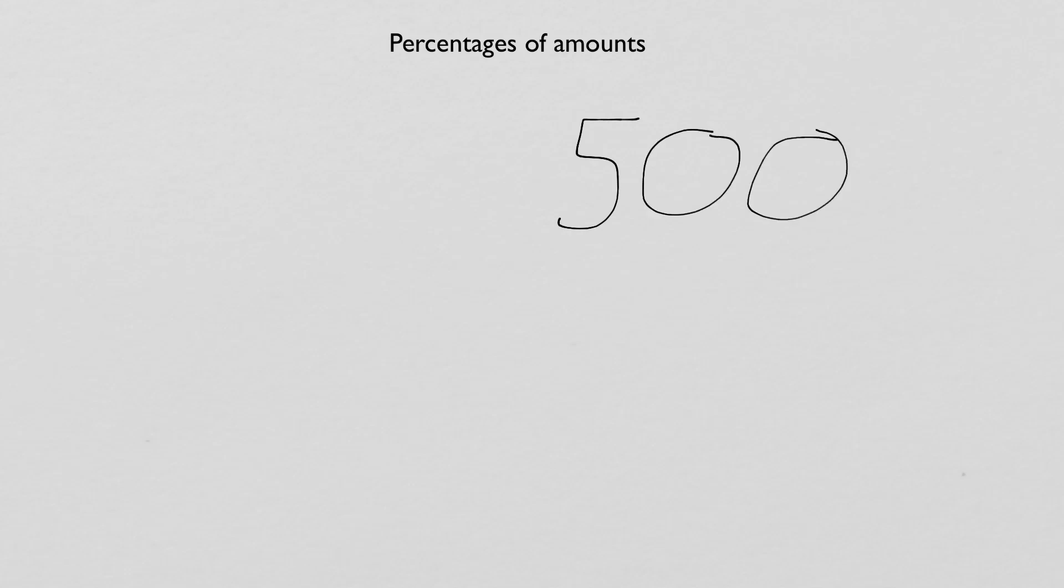And the first percentage we're going to find of 500 is 30%. To find a percentage of any amount, there's an easy way to start. The easiest way to start is to find 10%. Finding 10% of any amount is easy because all you have to do is divide that amount by 10. It's that simple.